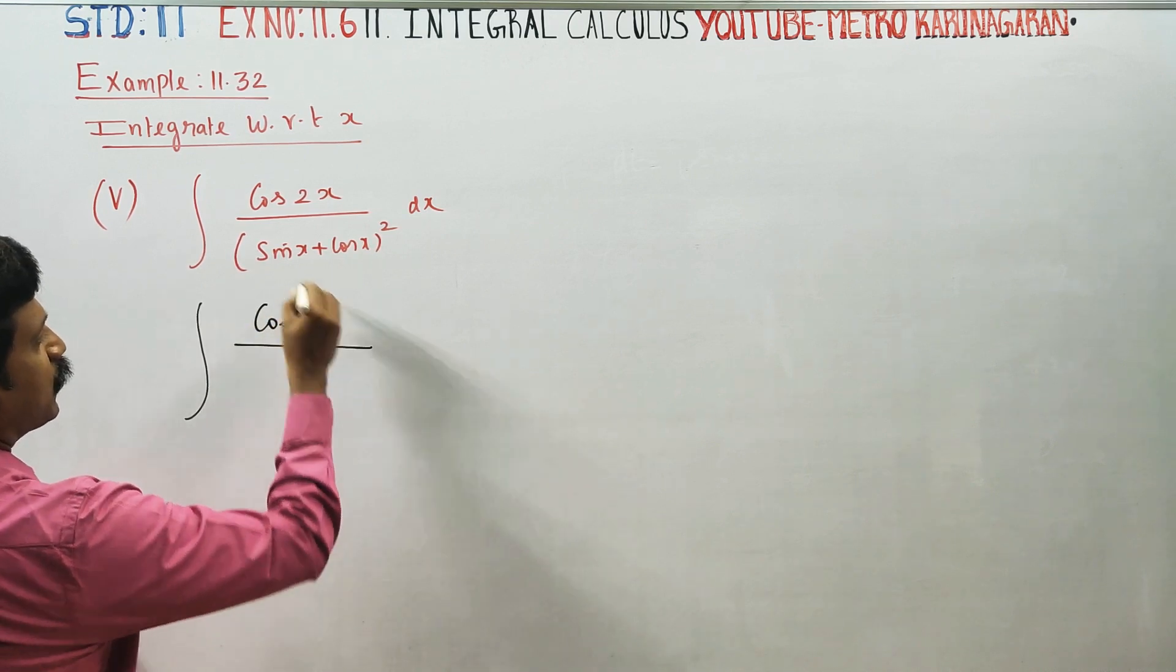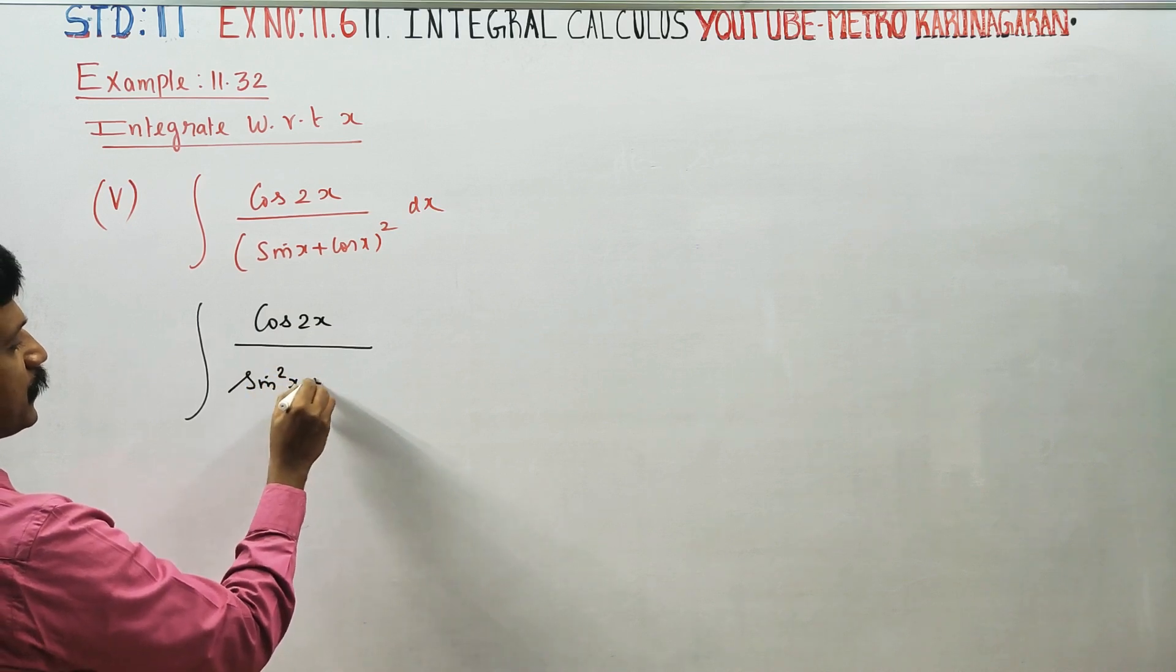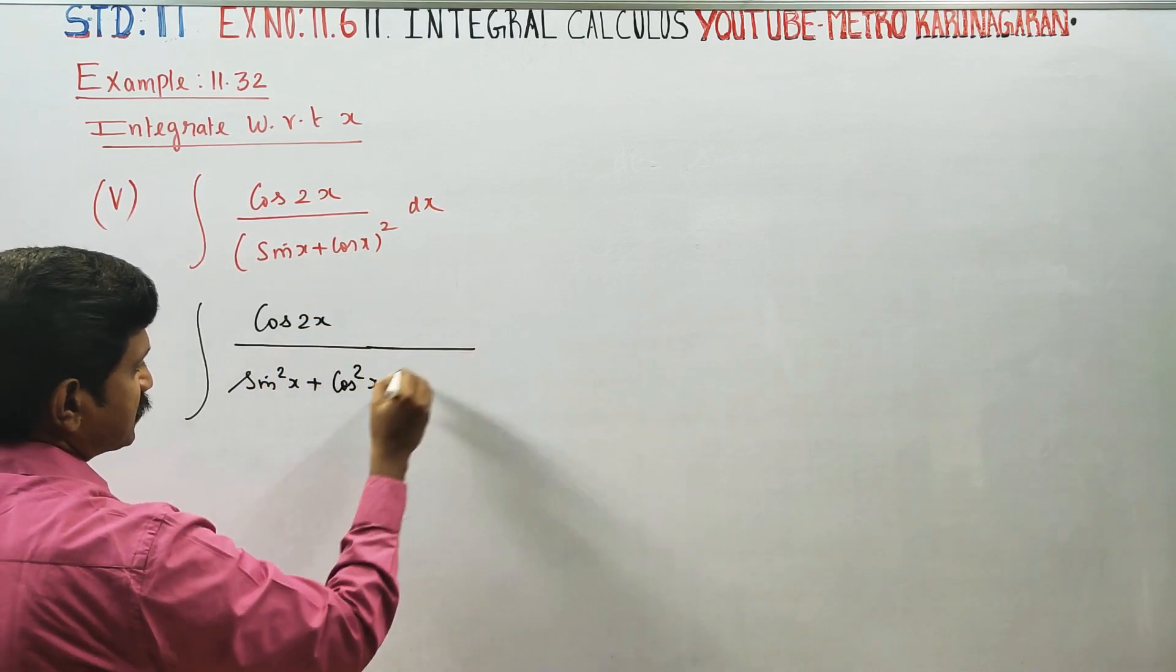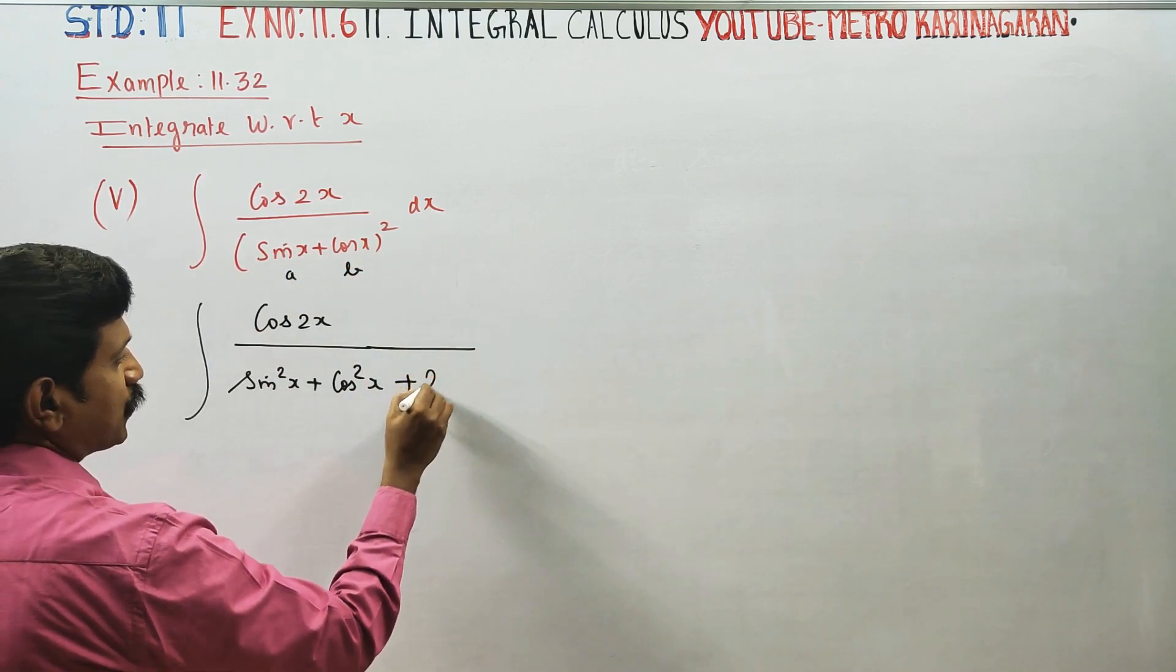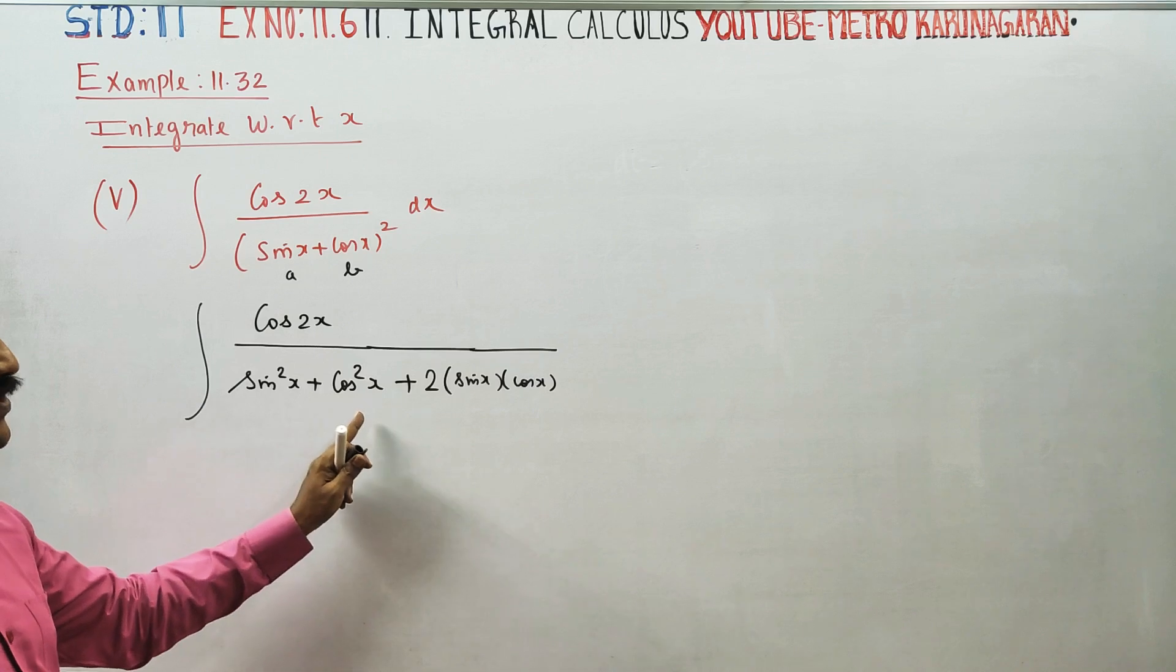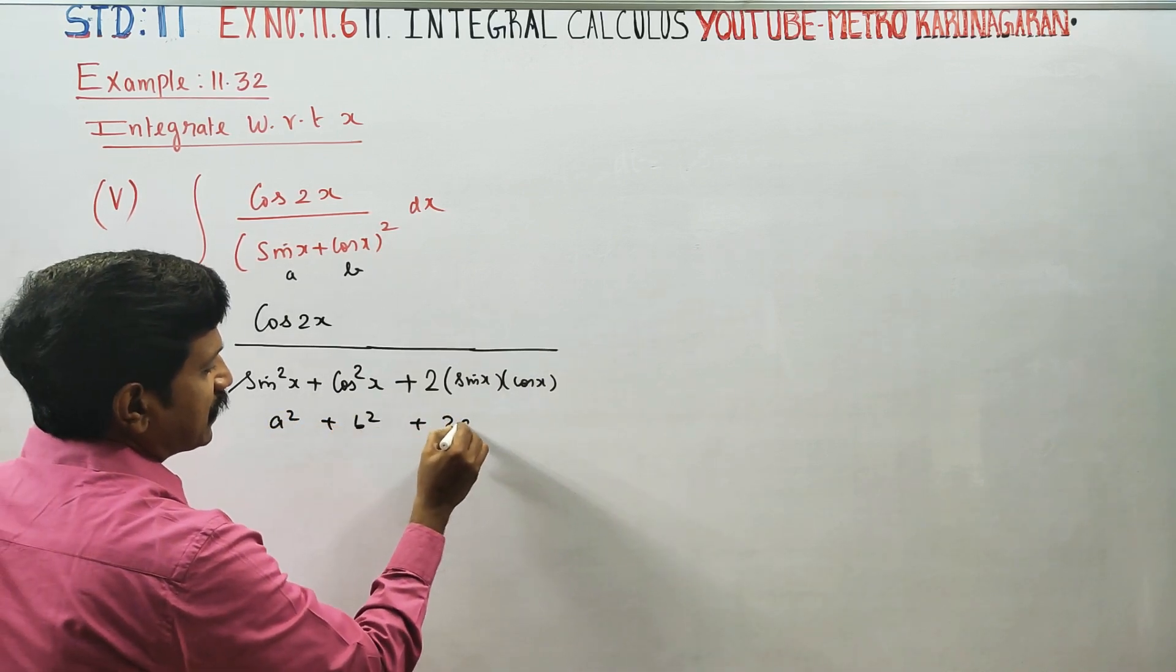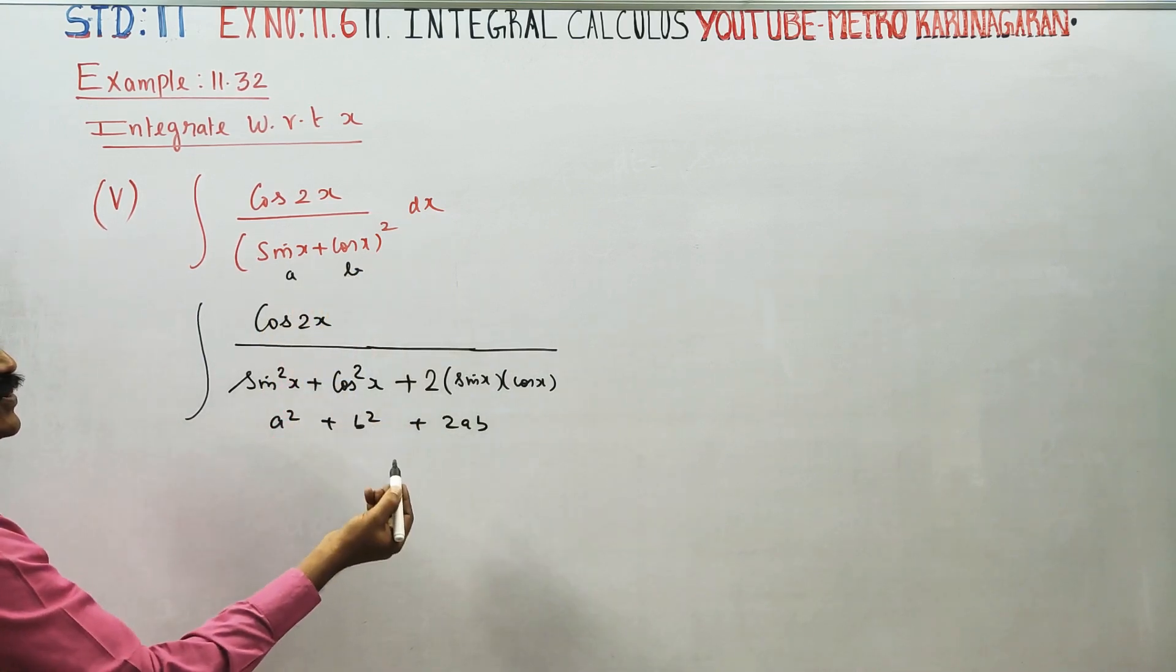Cos(2x) over (sin x + cos x)^2. What is a plus b whole square formula? We have sin^2(x) + cos^2(x) + 2sin(x)cos(x). This is the (a + b)^2 formula: a^2 + 2ab + b^2.